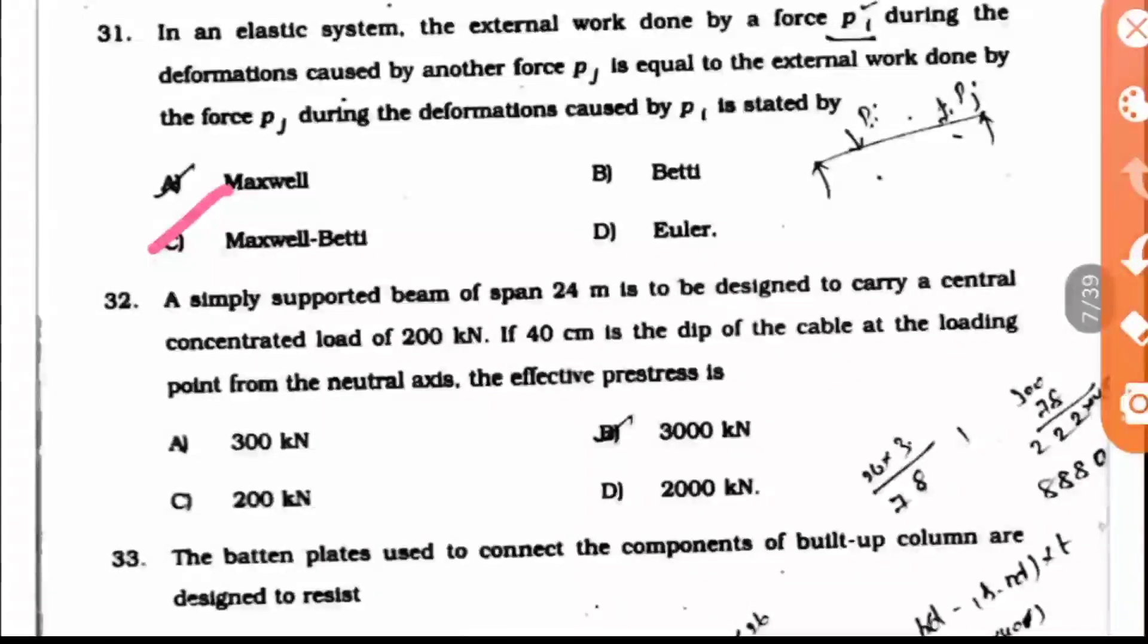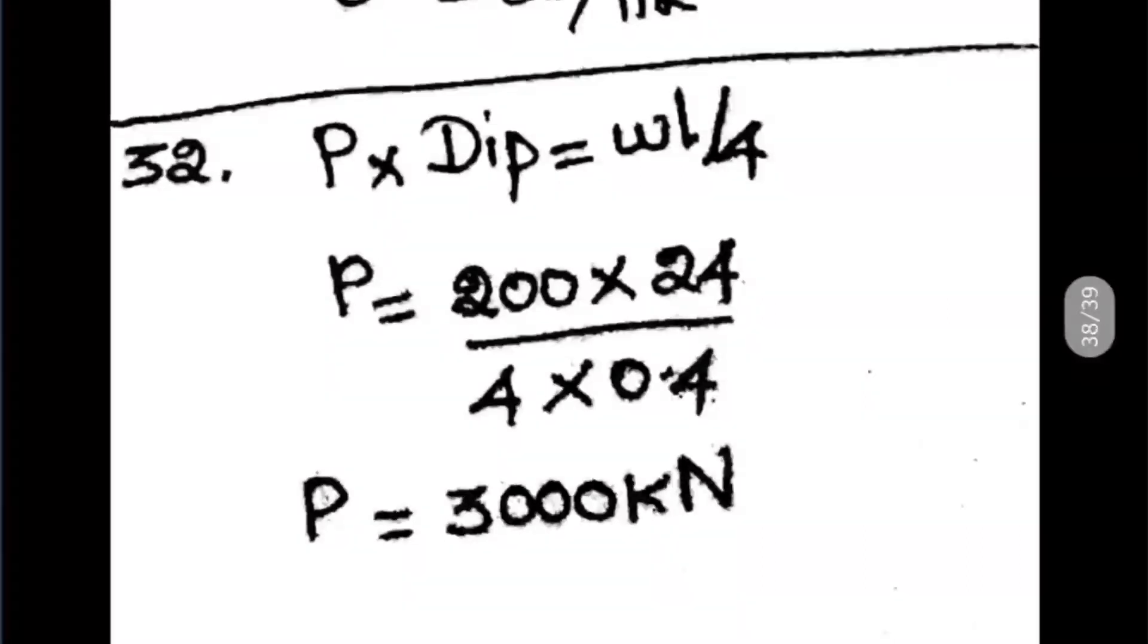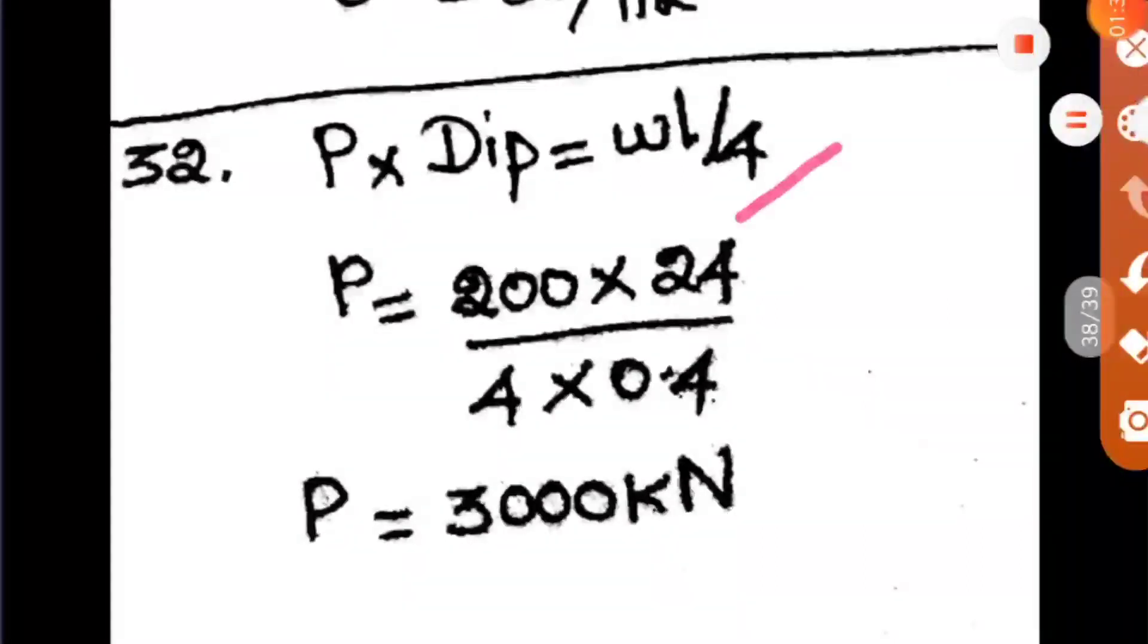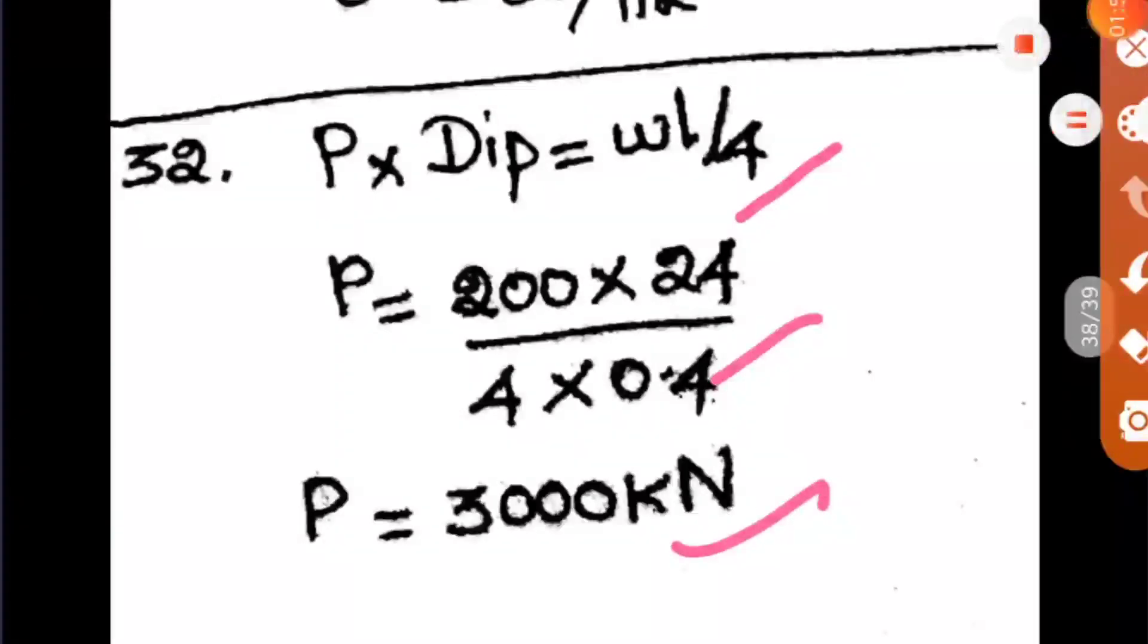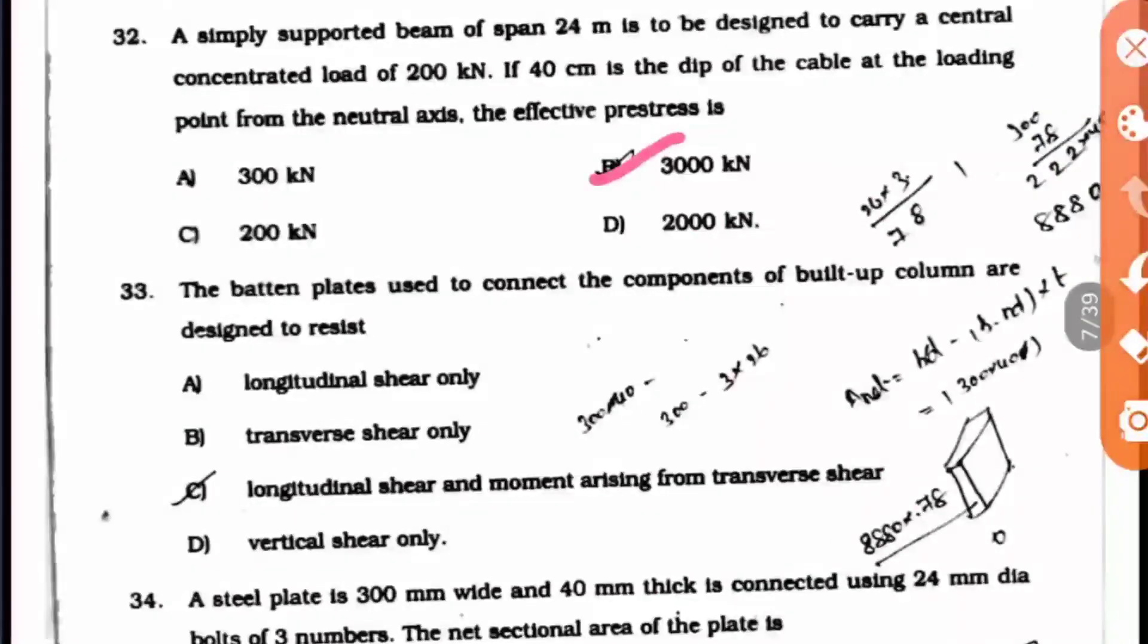Question 32: A simply supported beam of span 24 meters is to be designed to carry a central concentrated load of 200 kN. If 40 cm is the dip of the cable at the loading point from the neutral axis, the effective pre-stress is found using the formula: P × dip = WL/4. So P = (200 × 24)/(4 × 0.4) = 3000 kN. Option B is the right answer.